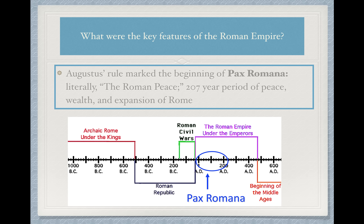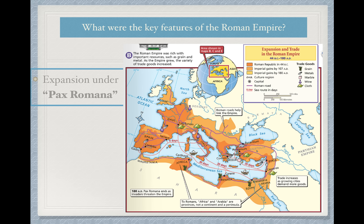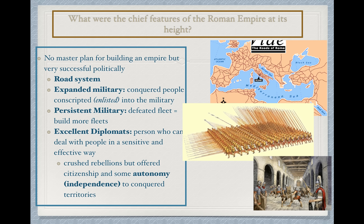We're going to break down each facet: the expansion, the peace, the wealth. First, here's a map showing the expansion of Pax Romana — you can see the physical territory that Rome controlled has expanded. We see all kinds of commerce going back and forth, meaning business and trade across both the Mediterranean and through road systems. On the left-hand side, put down political success. There was no master plan — Rome didn't necessarily set out to create an empire, but ultimately did. What made that empire so successful are these four key facets.